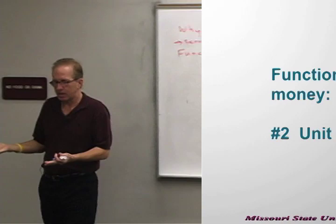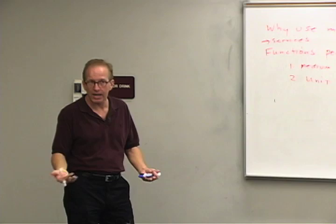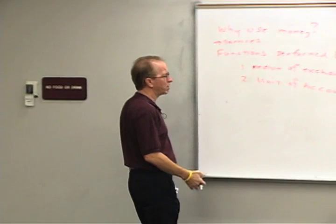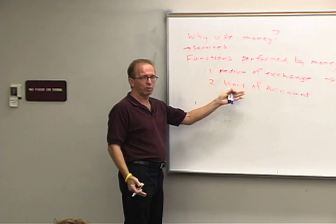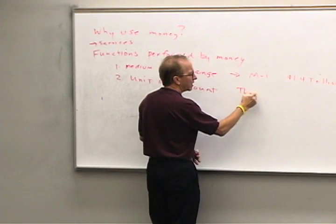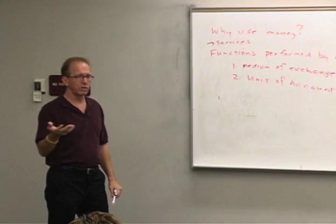If there were no money, the value of everything would be expressed in terms of other things. How much is an hour of your labor worth — two dozen eggs? Three pounds of hamburger? We would value things in terms of other things, which becomes extremely confusing. There would be a vast amount of economic information needed to interact in our economy, meaning high transactions costs. Instead, we use the dollar as a common unit of measurement for expressing economic values.